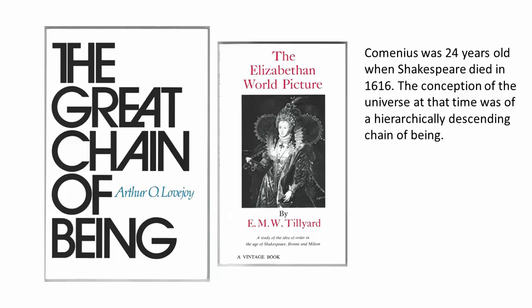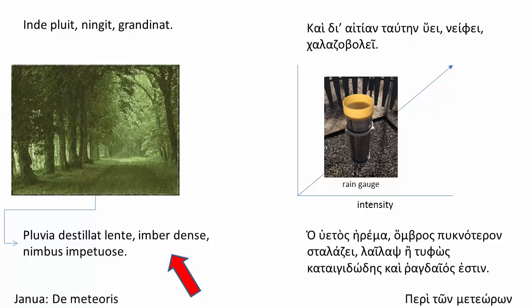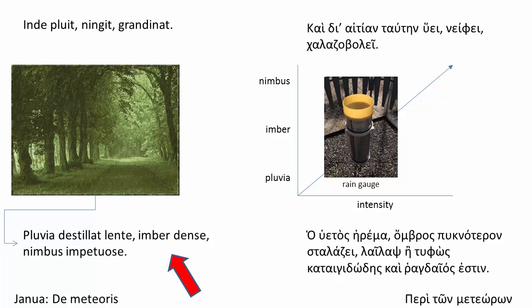In other words, the vocabulary in the Janua and the Orbis is given in a meaningful progression and in meaningful contexts. In terms of approach, the words of interest — mostly, but by no means exclusively, nouns, because the Janua and Orbis are all about naming things — are given in carefully crafted short, grammatically simple sentences that communicate something about these things. In the terminology of current foreign language pedagogy, each sentence is a bite-sized piece of comprehensible input. Take this sentence as an example from the Janua topic de meteoris on weather: Pluvia destillat lente, imber dense, nimbus impetuose. We learn from this sentence that pluvia, imber, and nimbus signify rainfalls of increasing intensity. Something meaningful has been communicated.